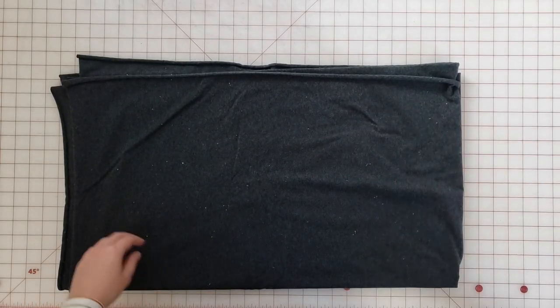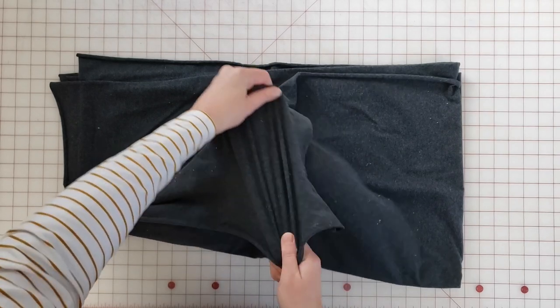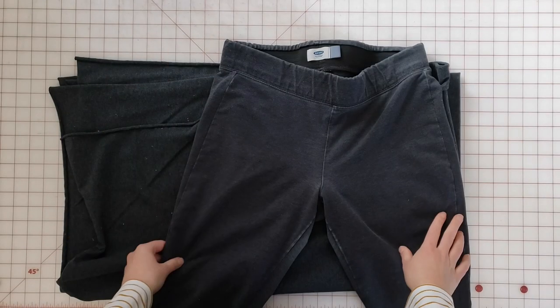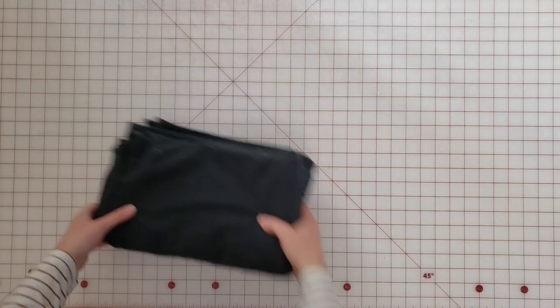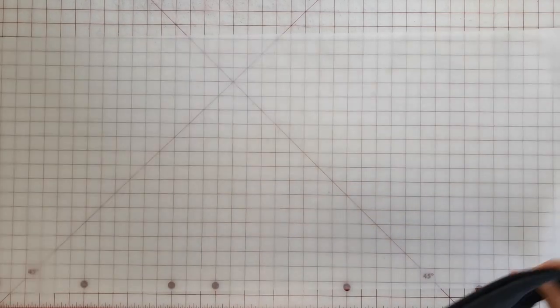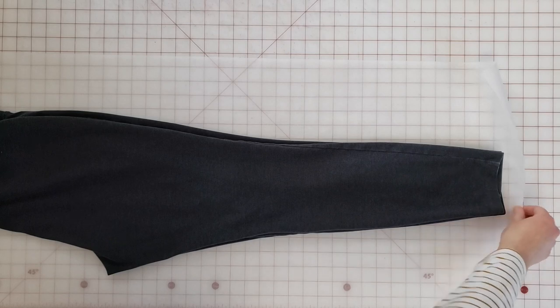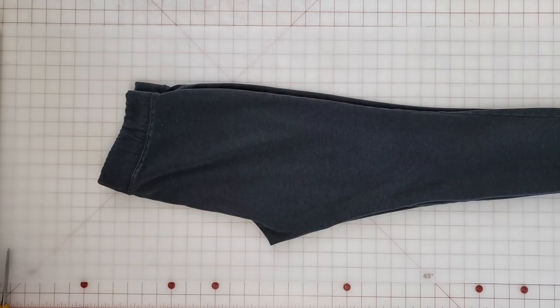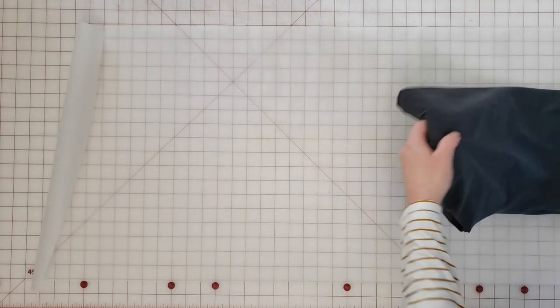The fabric I'll be using for this project is a medium weight cotton poly spandex blend with four-way stretch and decent recovery. It's really similar to the color of my leggings. I'll be transferring the pattern onto trace paper so that I can reuse this later.